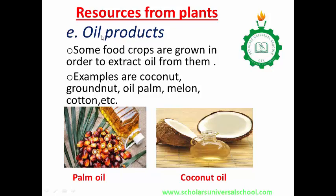Oil products — some crops are grown in order to extract oil from them. Examples are coconut, groundnut, oil palm, melon, cotton, etc. The palm tree is grown to extract palm oil from it. The coconut serves as a fruit and its oil is also used as cream. Palm oil is used for cooking.